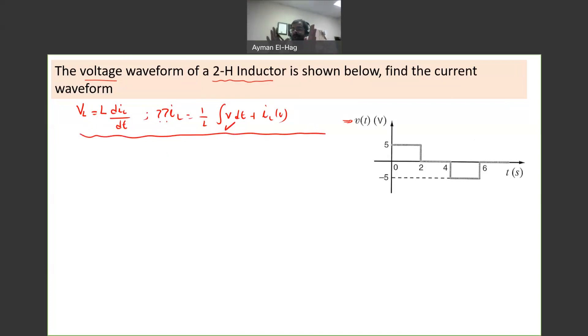Now we will start to split the interval. This is common whether it's a derivative or integration. At T less than 0, the voltage was 0, and there's no indication the inductor was charged. So IL equals 0. We start at T equals 0, and the current was equal to 0.